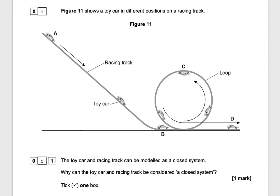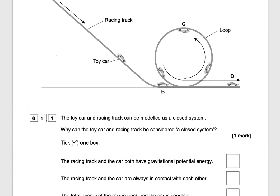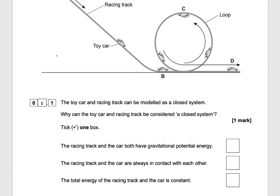Looking at the racing track, the car is racing down, going into a loop and then coming out, and all this is a closed system. The options are: the racing track and the car have gravitational potential energy, the racing track and the car are always in contact with each other, or the total energy of the racing track and car is constant.